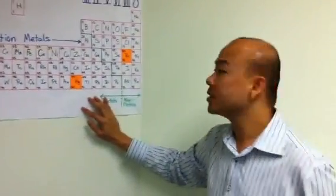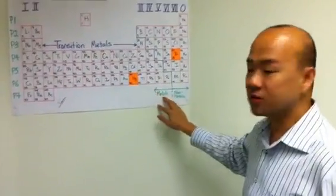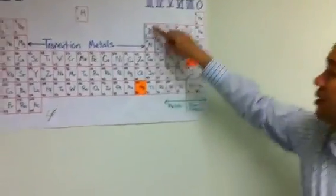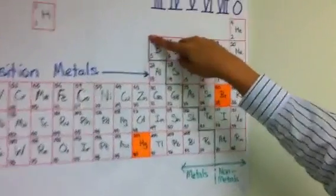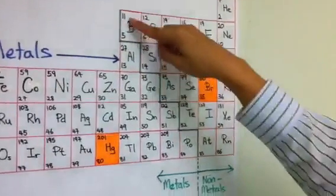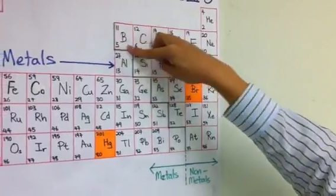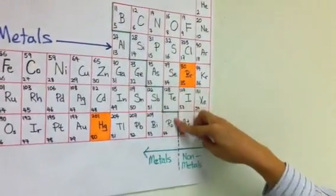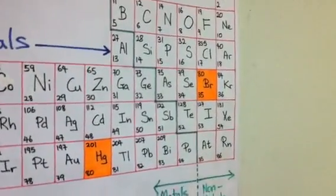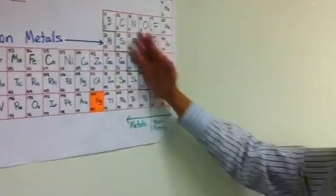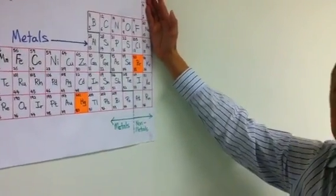Besides that, the elements are also classified in terms of metals and non-metals. If you stay close and look at this, there is a green line over here which separates boron and aluminum. And then you realize that it's a step all the way towards the right side. This will separate the metals which is on the left hand side and the non-metals which is on the right hand side of the periodic table.